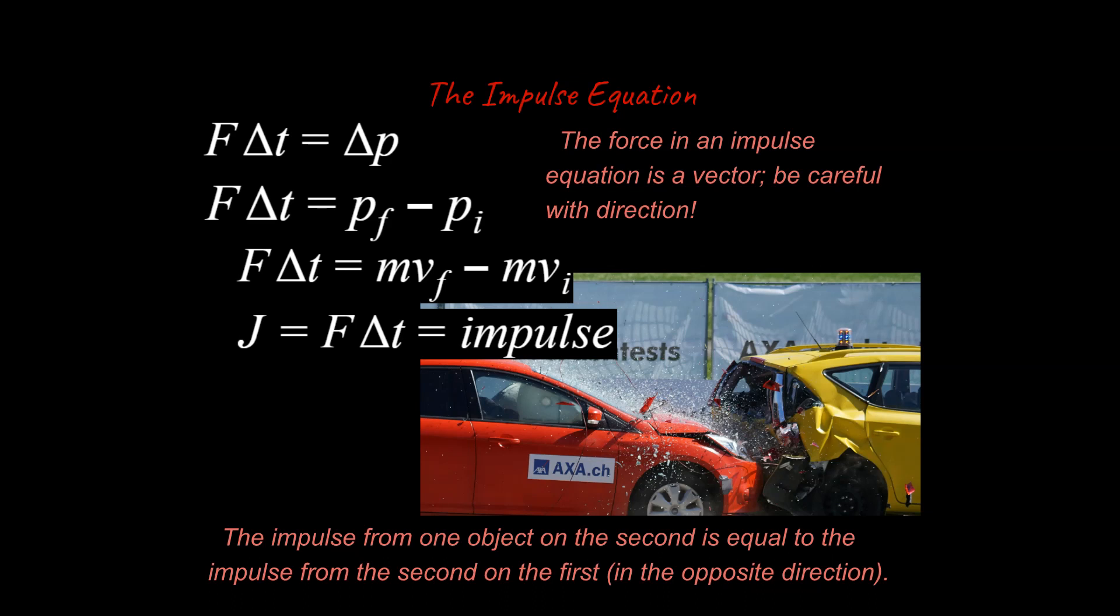Lastly, the impulse from one object on the second is equal to the impulse from the second on the first in the opposite direction. This is like the momentum version of Newton's third law. Typically we don't notice this because we just focus on one object at a time.